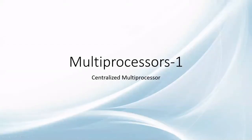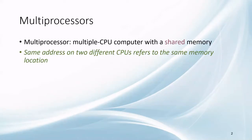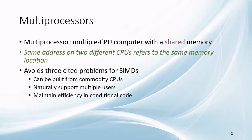Today we will be seeing more about multiple CPU computers and their function. Usually, a multiple CPU computer uses a shared memory. An address which is the same in multiple CPUs refers to the same location in the shared memory. They can be built using commodity CPUs and serve multiple users.